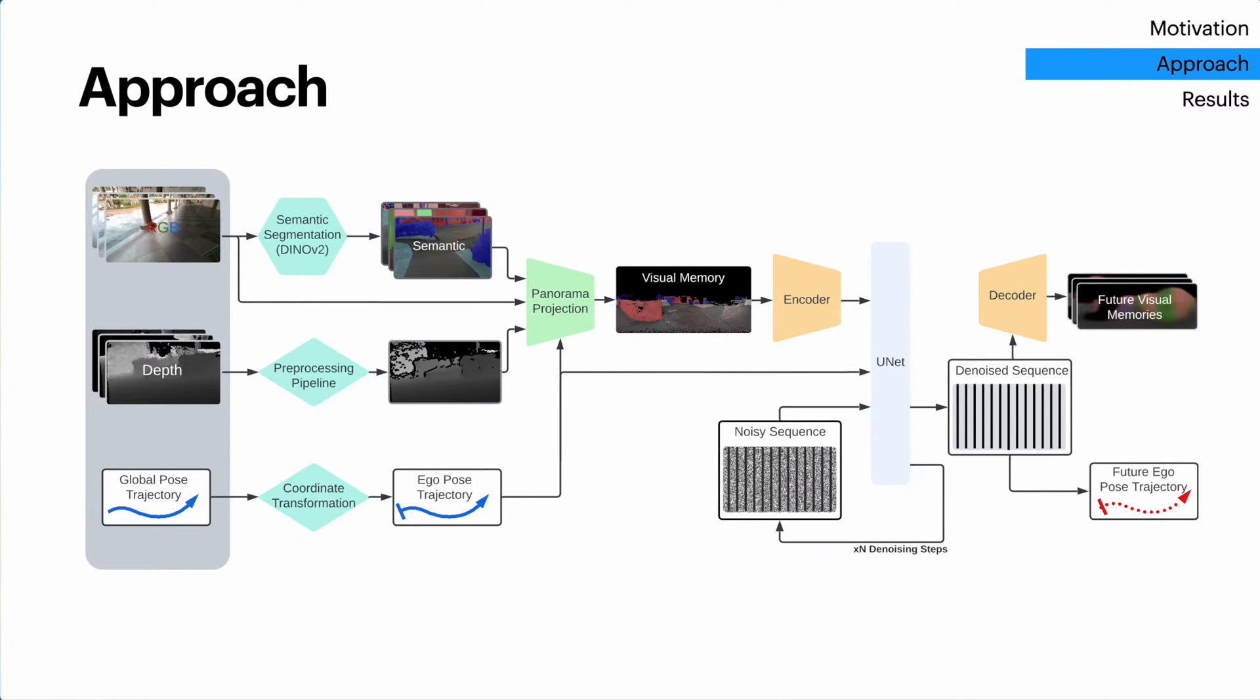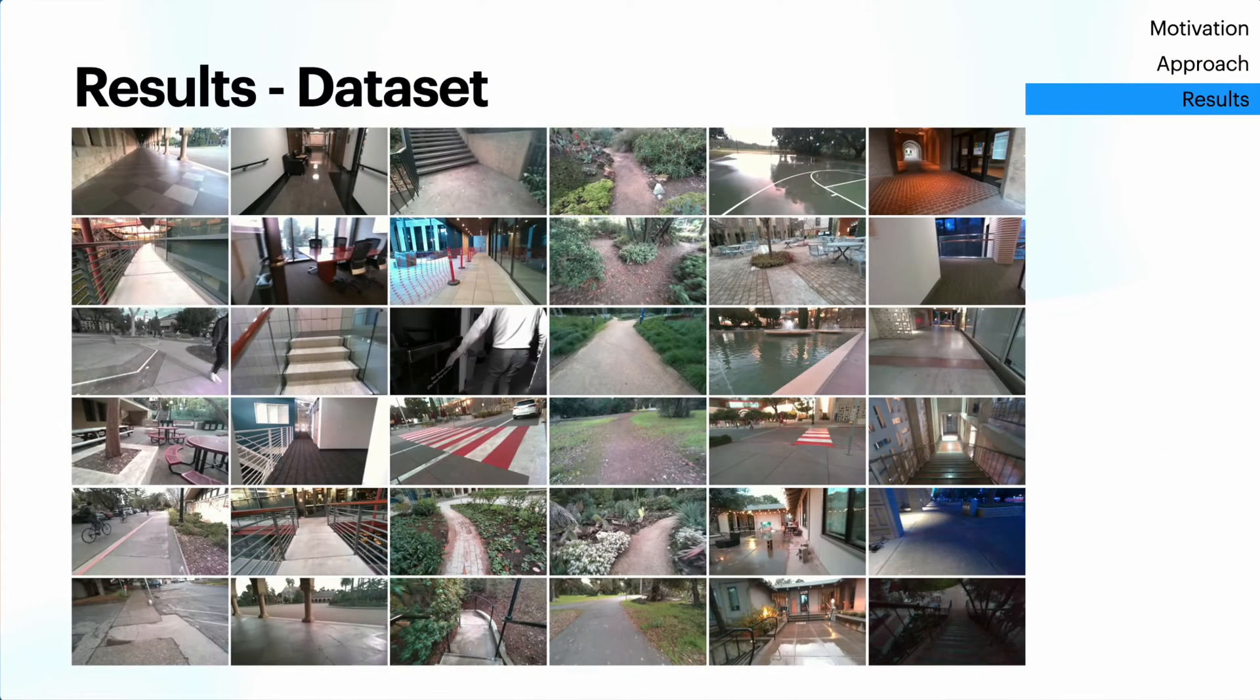In summary, our approach takes in first-person video, distills it into a compact visual memory, and then uses a diffusion model to generate a discrete distribution of possible future trajectories, all in real time. Let's take a look at how well it works on real-world data.